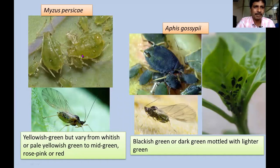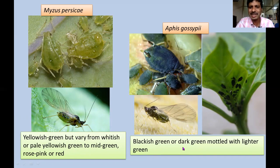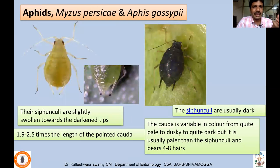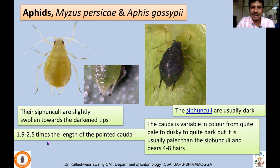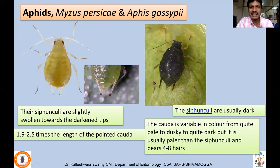Two important aphid species infest chili and transmit viral diseases: Myzus persicae and Aphis gossypii. Myzus persicae is yellowish green, varying from whitish or pale yellowish green to mid-green. Aphis gossypii is blackish green or dark green mottled with lighter green. To distinguish them: in Myzus persicae the siphunculi are slightly swollen towards darkened tips, with siphunculi length 1.9 to 2.5 times the cauda length, and the cauda is pointed. In Aphis gossypii, siphunculi are dark-colored and the cauda is paler than the siphunculi.